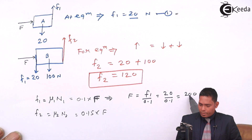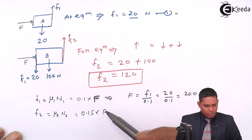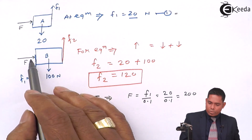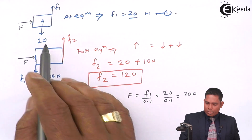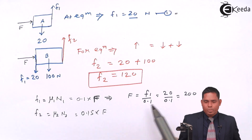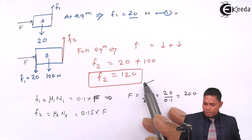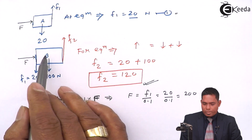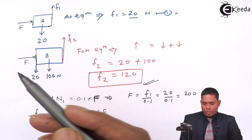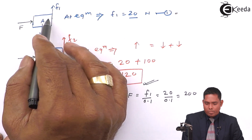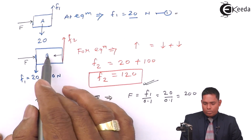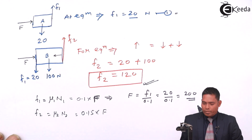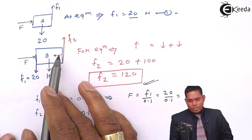If F equals 200 Newton and we substitute it into the second equation, the force F2 comes out to be different from 120 Newton. This is because some additional forces in the normal direction are not being accounted for in that approach — the free body diagram is more involved. Therefore, we should use the direct equilibrium approach, which correctly gives the answer as 120 Newton.